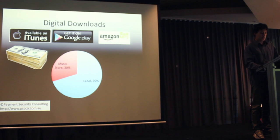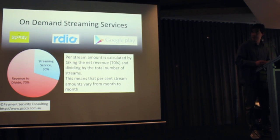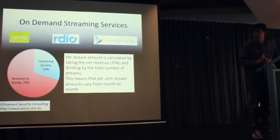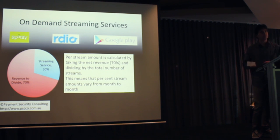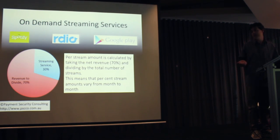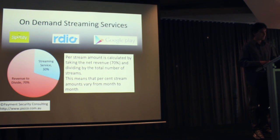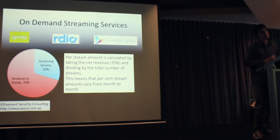Generally, the next step is the newer on-demand streaming services, which is more where my talk is based around. These are your Spotify, IDEO, and Google's got a new service out there as well. These all work on a system that's a bit different from your digital download model. You're looking at the same kind of revenue cut — 30 percent goes to the actual streaming service and 70 percent goes back to the publisher, the artist, and all the rest of them. However, the way that the revenue is divided and the payments are calculated differs from your digital download.